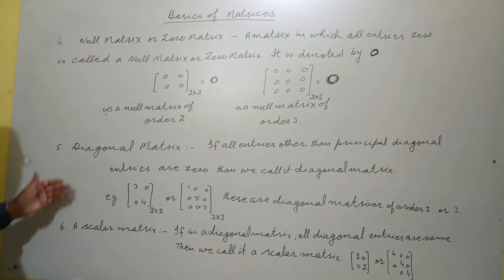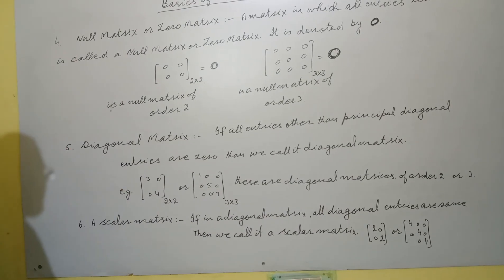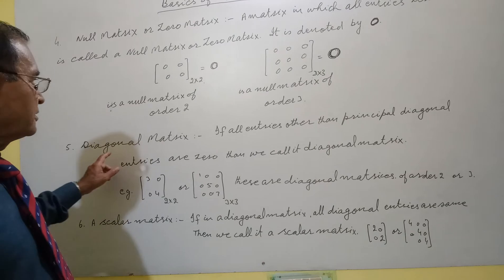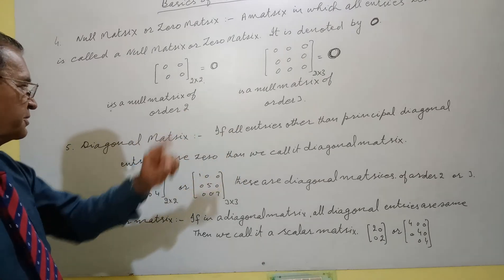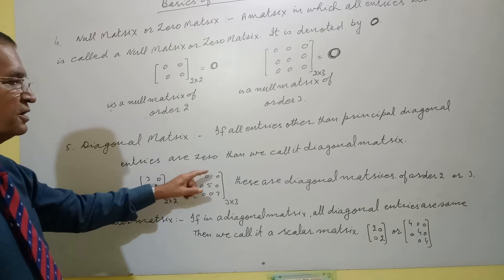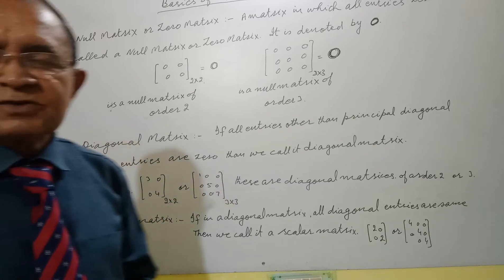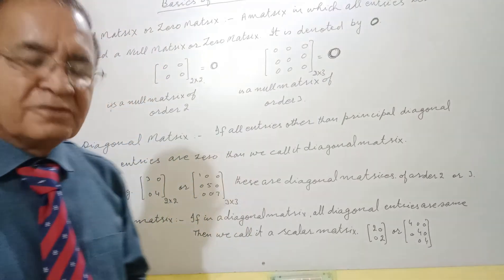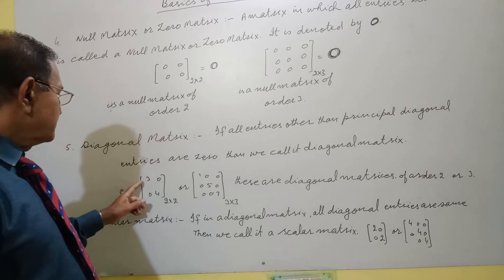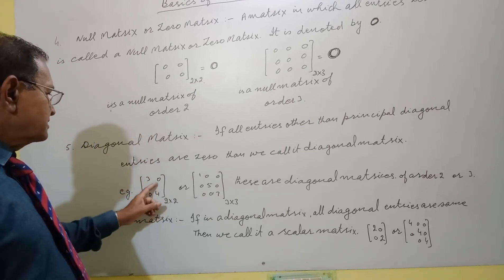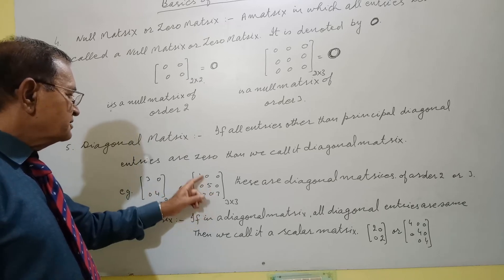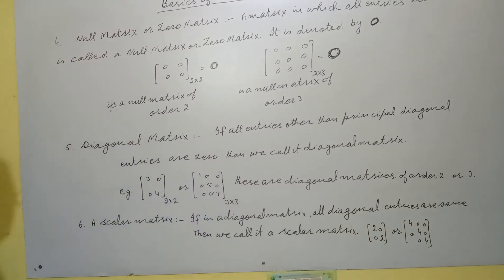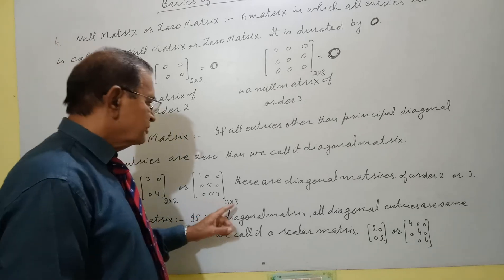Then we have a diagonal matrix. If all entries other than the principal diagonal entries are zero, then we call it a diagonal matrix — only diagonal entries are non-zero, otherwise all entries are zero. For example, a matrix with diagonal elements 3, 4 and zeros elsewhere is a diagonal matrix of order 2; similarly with diagonal elements 1, 5, 7 it is of order 3.